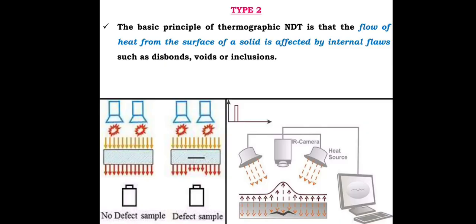The basic principle of thermographic NDT is that the flow of heat from the surface of a solid is affected by internal flaws such as disbonds, voids, and inclusions. In this picture we can see non-defected samples and defected samples. We can see the image of the IR camera and heat source. In this technique, using an energy source, we are getting the display in the computer monitor system also.